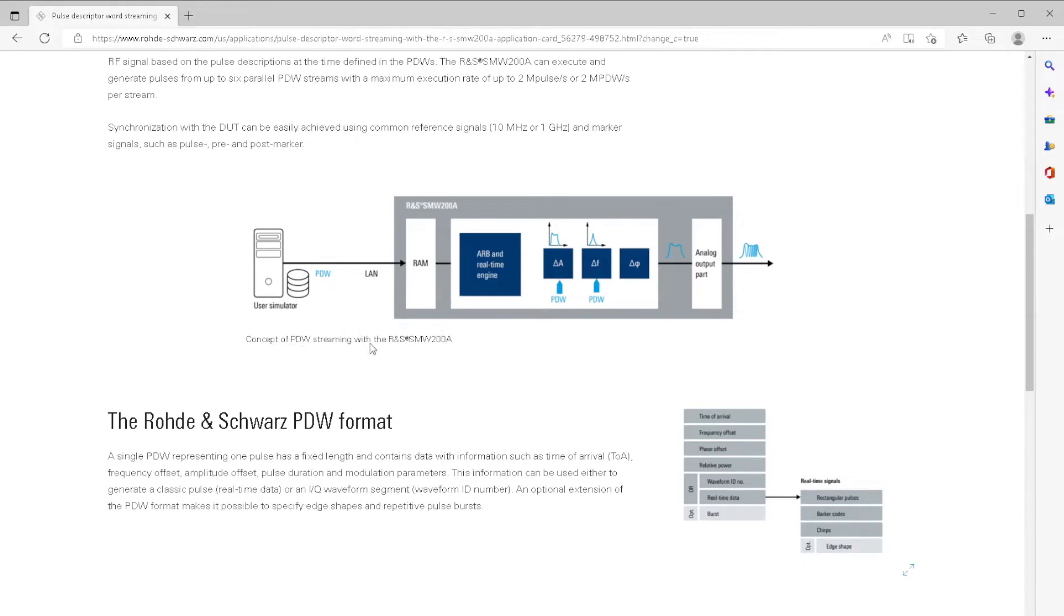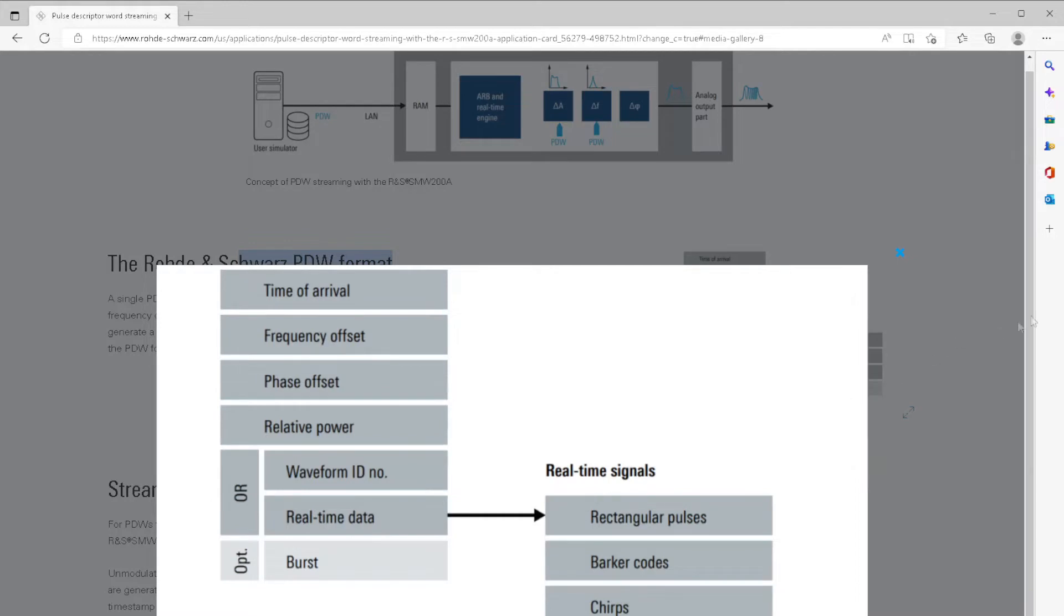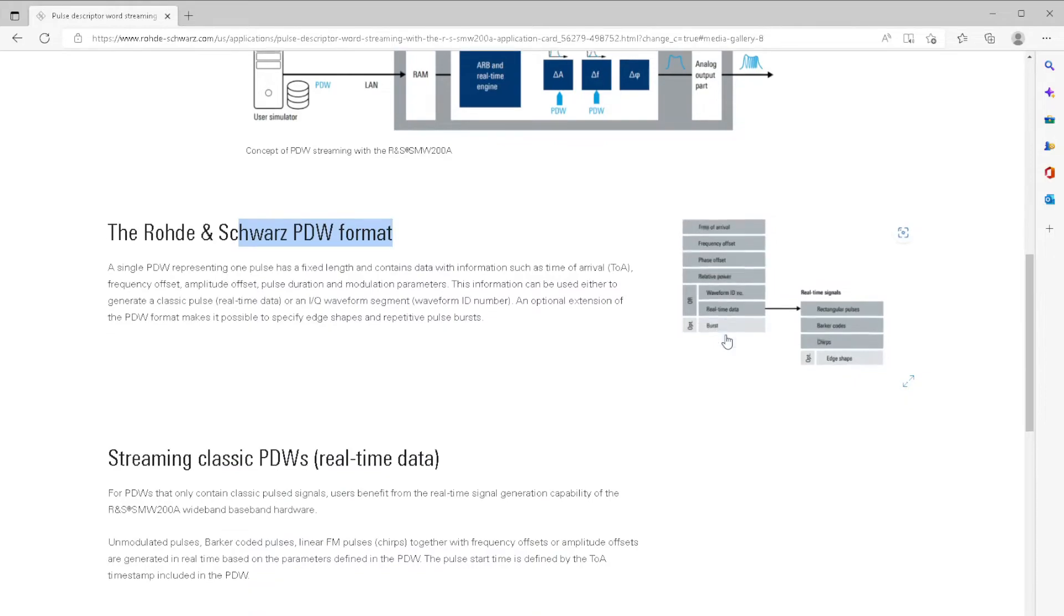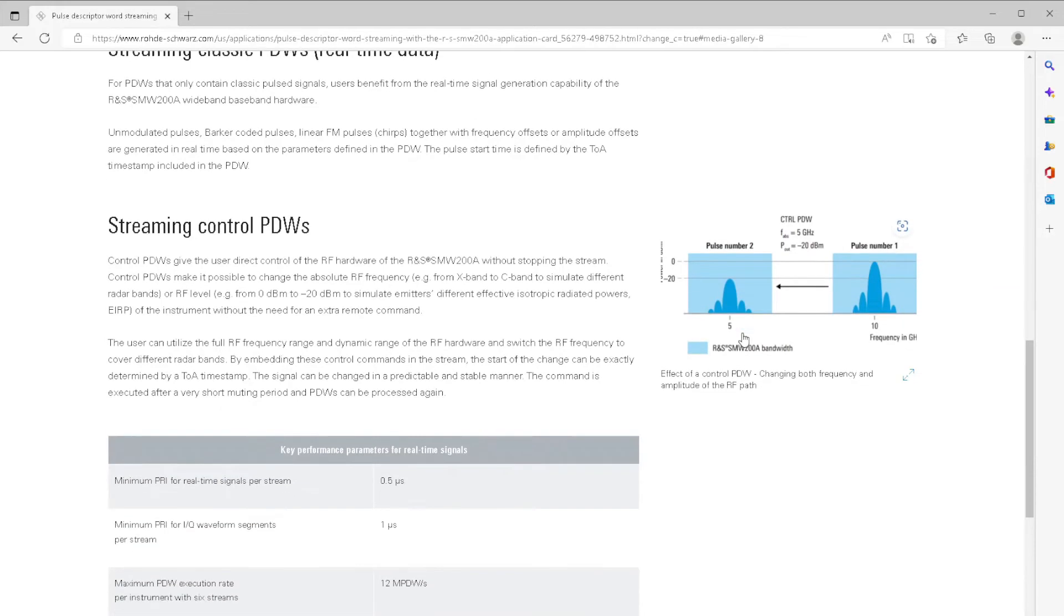Some data, your task, the solution, some really nice schematics as you can see here, concept of a PDW streaming. Okay, user, LAN, then the product by Rohde, and you can understand in different domains: amplitude, frequency, phase difference, analog output. To generate, to simulate the incoming, a possible radar threat. And the PDW formatting, as you can see here. You have time of arrival, frequency offset, and several, several, several information here. Real-time data.